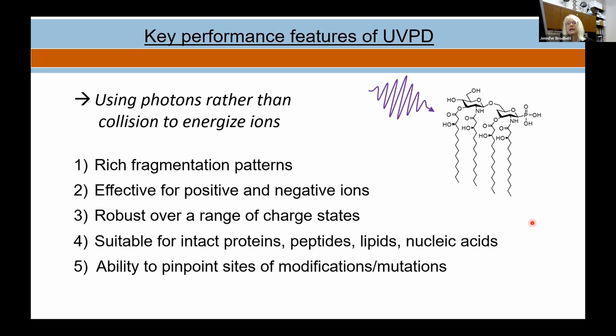Key performance features of UVPD versus traditional collisional activation: there are very rich fragmentation patterns, it can be used in both positive and negative modes, and over a range of charge states. For lipids we typically look at relatively low charge states, though for proteins the range is huge. Because of the level of detail in the fragmentation patterns, it is very useful for pinpointing sites of modifications or mutations in structures.